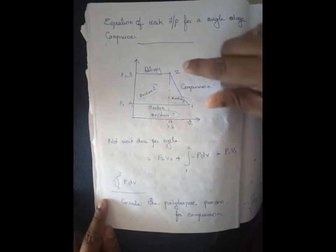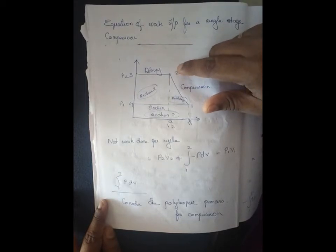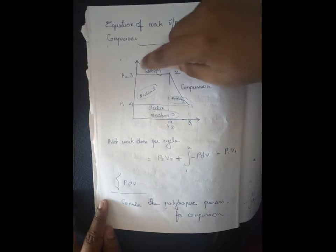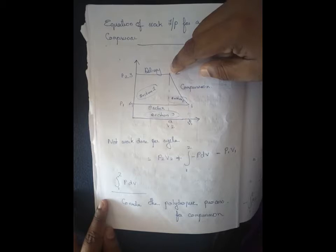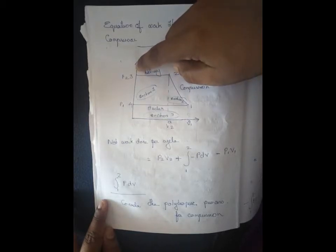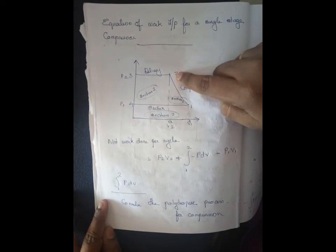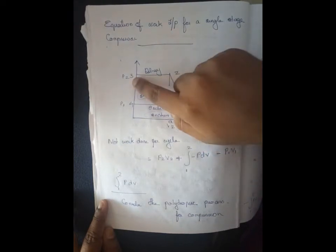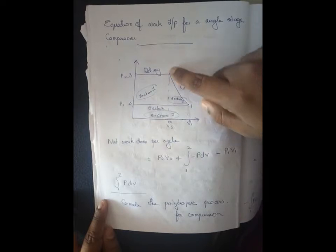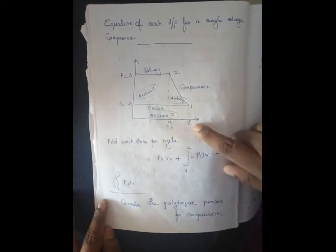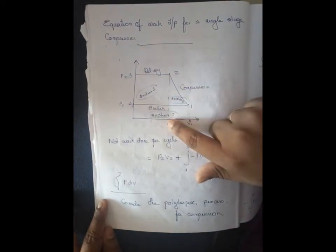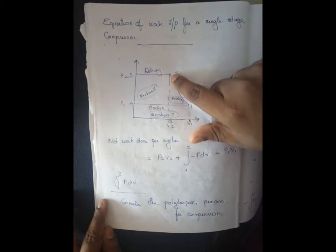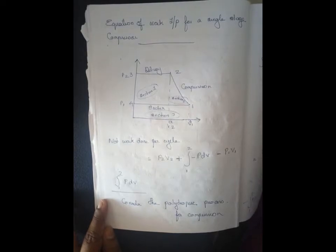Compression continues and the delivery valve opens. The pressure reaches its highest value: P2, V2. The volume at this stage is V2.